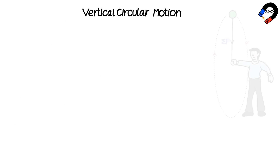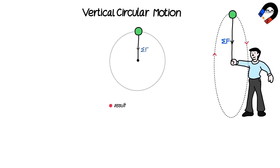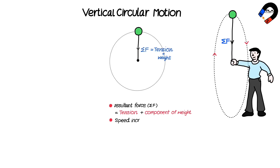Vertical circular motion of a ball attached to a string: the resultant force, or centripetal force, is provided by the tension in the string and the components of weight. If the speed increases, the resultant force needs to increase in order to keep the ball in a circular path. This causes the tension in the string to also increase.